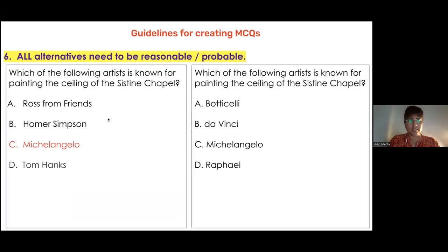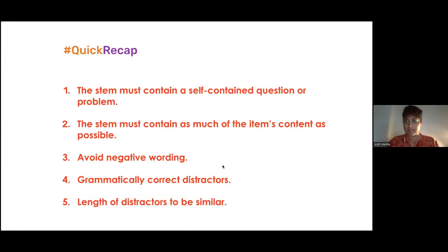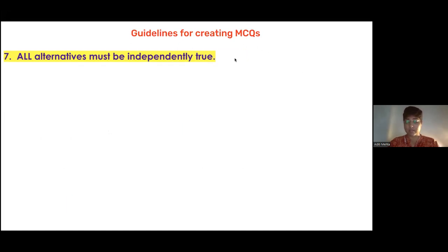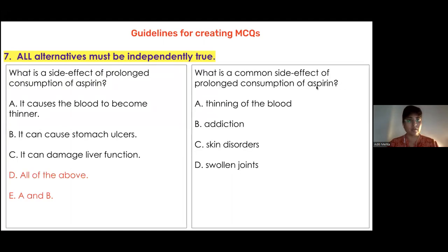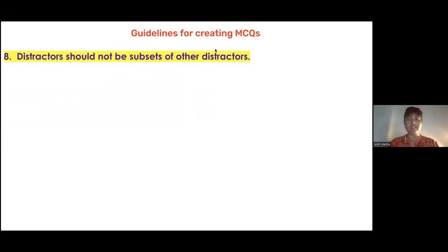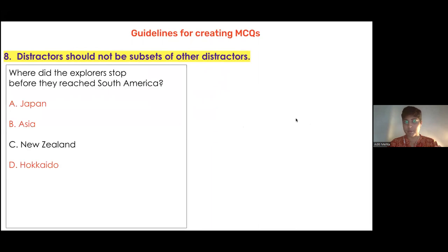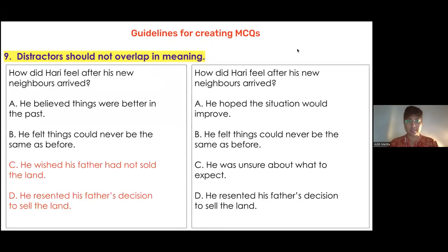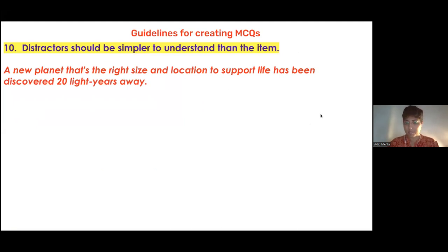To repeat all the rules: one — the stem must contain a self-contained question; two — it must contain as much of the item's content as possible; three — avoid negative wording; four — ensure grammatical alignment between stem and distractors; five — length of distractors should be similar; six — all alternatives must be reasonable and probable; seven — all alternatives must be independently true, so don't use 'all of the above' or 'none of the above'; eight — distractors should not be subsets of each other; nine — distractors should not overlap in meaning; ten — distractors should be simpler to understand than the test item.